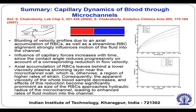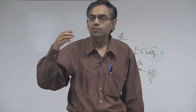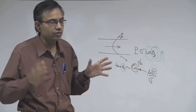Axial accumulation of red blood cells leaves behind a lower-viscosity plasma skimming layer near the microchannel wall, which is otherwise a region of high rates of strain. Consequently, the apparent viscosity of the whole blood sample decreases, and the effect of reduction becomes significantly prominent as the size of the red blood cell approaches the hydraulic diameter of the microfluidic channel. This effect is relevant only for micro-capillary blood vessels, not all sorts of blood vessels.